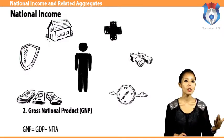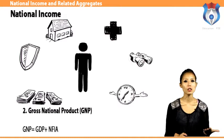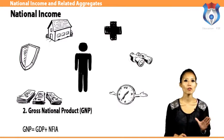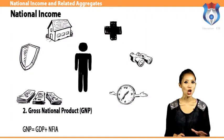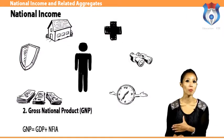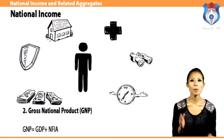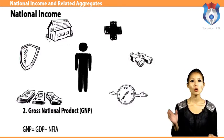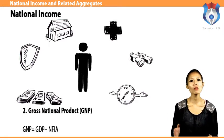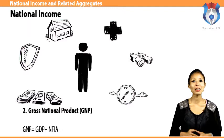Gross National Product (GNP) is the total market value of all final goods and services produced in a year. GNP includes net factor income from abroad, whereas GDP does not. Therefore, GNP equals GDP plus net factor income from abroad. Net factor income from abroad equals factor income received by Indian nationals from abroad minus factor income paid to foreign nationals working in India.